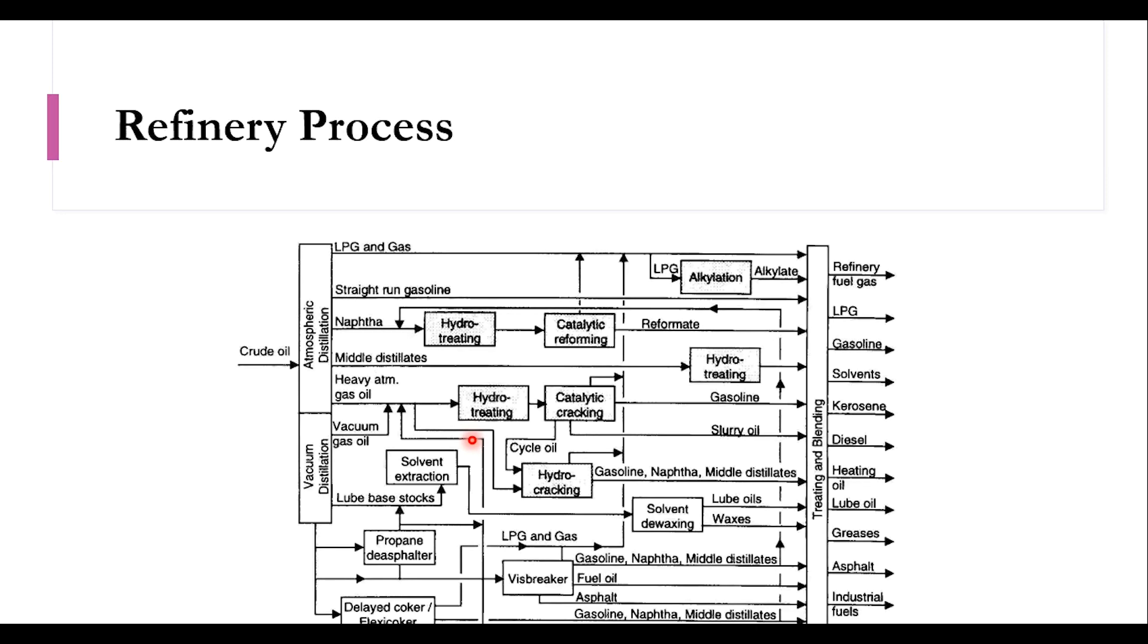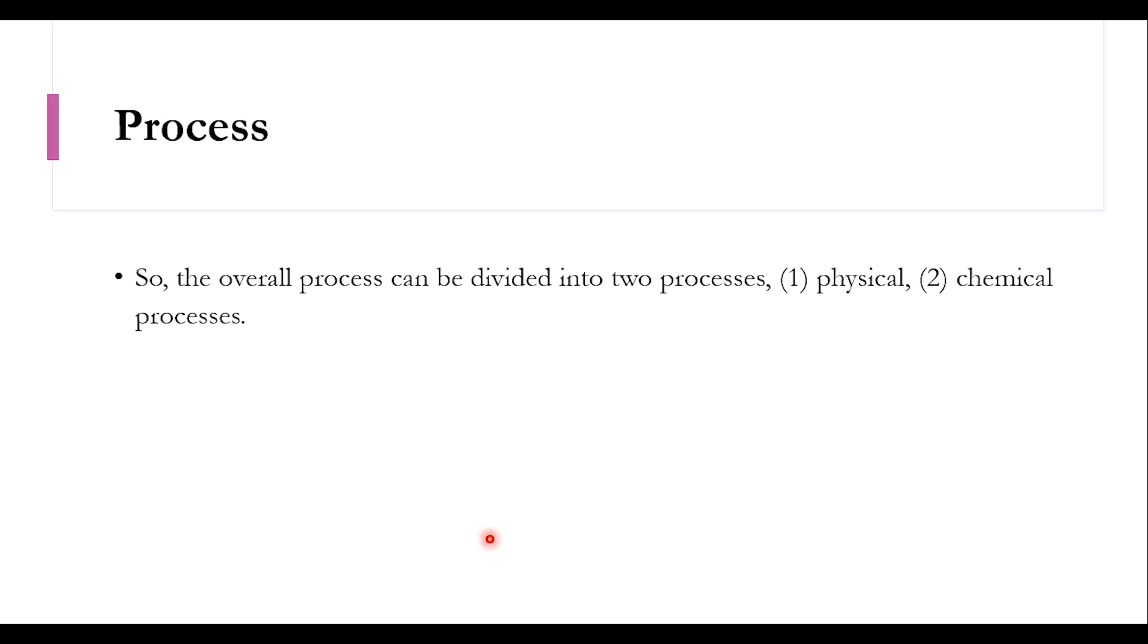Now if you look at the refinery process, this process is a detailed process and core of chemical engineering. There are two types of distillation in the system, atmospheric and vacuum distillation - we will talk about it once we get more into this course. The crude oil is sent to the atmospheric distillation and to vacuum distillation. LPG gas, straight run gasoline, different products are producing. Hydro-treating, catalytic reforming, alkylation, treating and blending, hydro-treating and different aspects are included in the system.